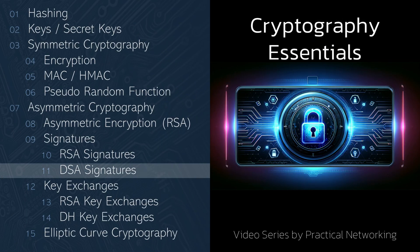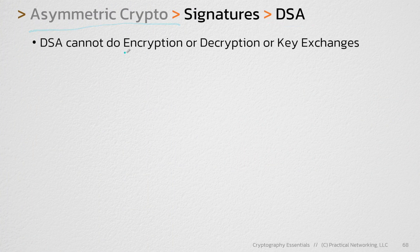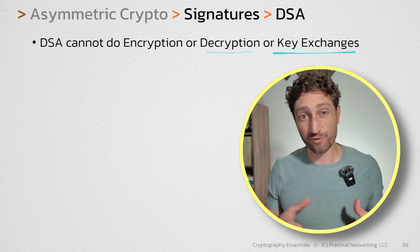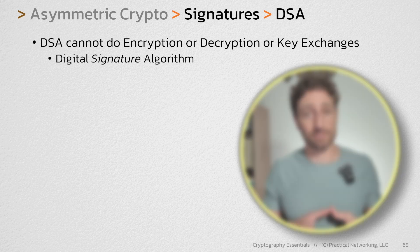DSA is another asymmetric crypto algorithm that can be used to create digital signatures, but it's different from how RSA did it. DSA is an asymmetric crypto algorithm, but it cannot be used for encryption, decryption, or key exchanges. It's sort of baked into the name — it is, after all, the Digital Signature Algorithm.